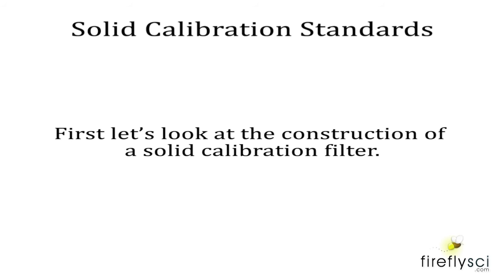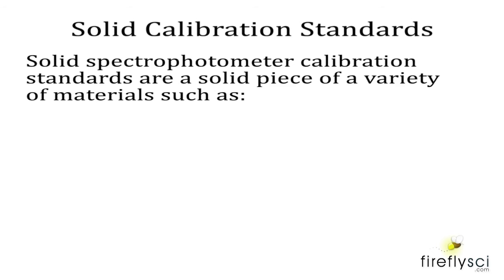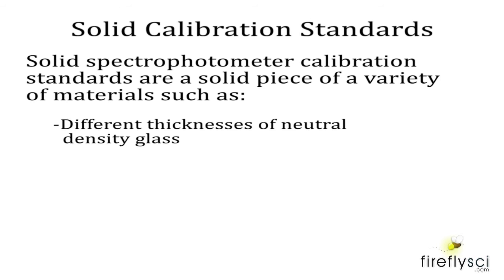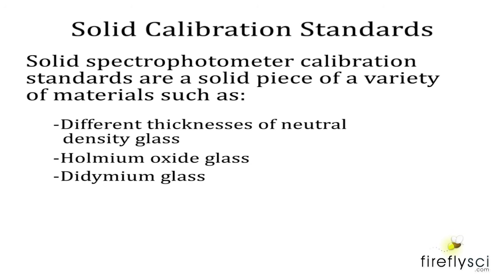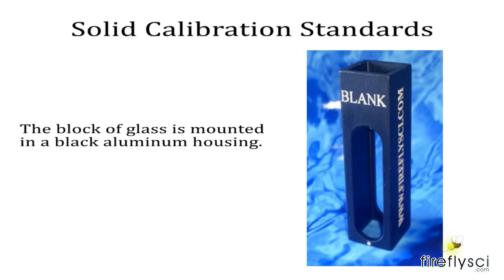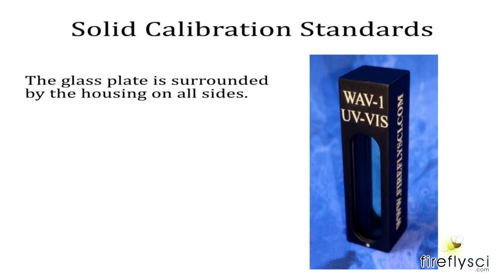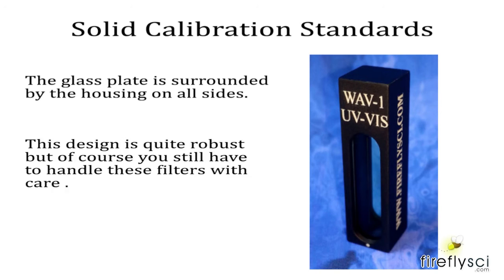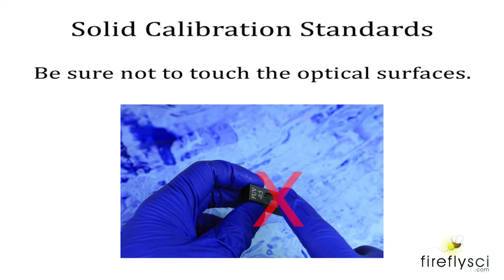Let's look at the construction of a solid calibration filter. Solid spectrophotometer calibration standards are a solid piece made from a variety of materials, such as different thicknesses of neutral density glass, holmium oxide glass, didymium, and other materials. The block of glass is mounted in a black aluminum housing, with the glass plate surrounded by the housing on all sides. This design is quite robust, but you still need to handle these filters with care and avoid touching the optical surfaces with your bare hands.